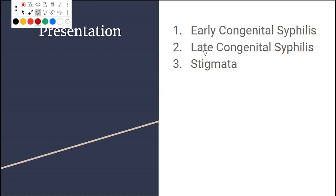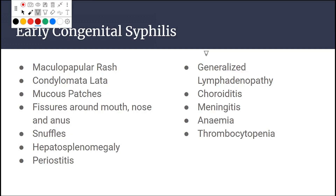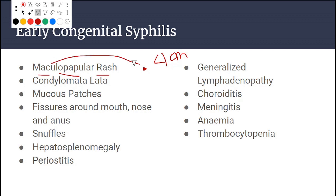Early congenital syphilis has three main presentations: early congenital syphilis, late congenital syphilis, and stigmata. Early congenital syphilis presents with a maculopapular rash. A macule is a circular, flat area on the skin less than one centimeter. A papule is also less than one centimeter but raised — you can feel it with your hands.